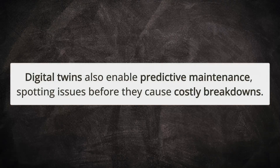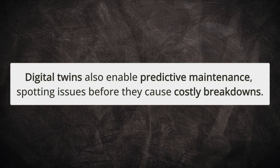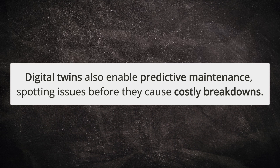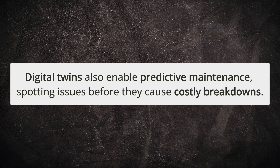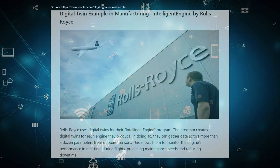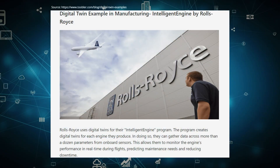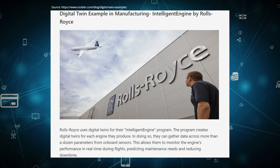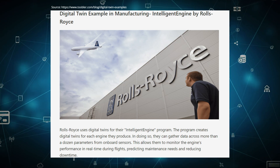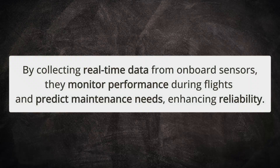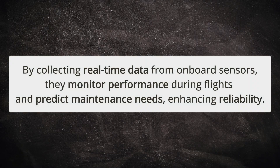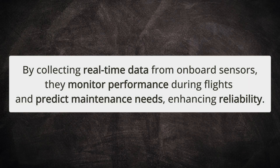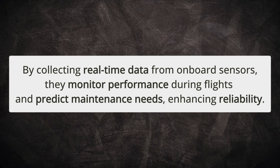Additionally, digital twins facilitate predictive maintenance, identifying problems before they lead to costly breakdowns. A notable example is Rolls-Royce's Intelligent Engine Program, which generates digital twins for each engine. By gathering real-time data from onboard sensors, they can monitor performance during flights and predict maintenance needs, ultimately boosting reliability.